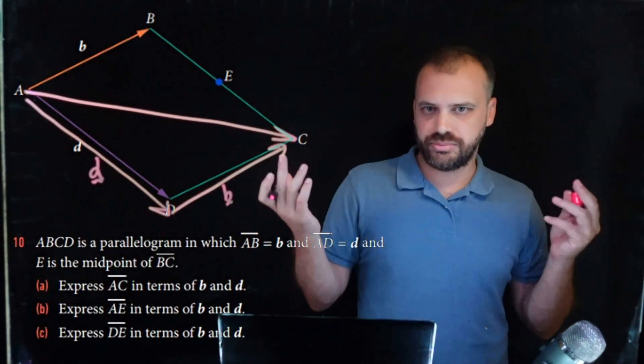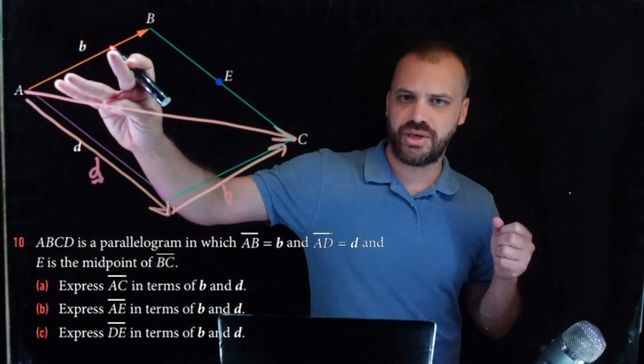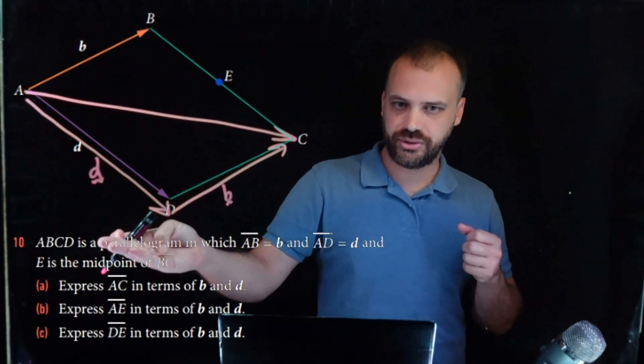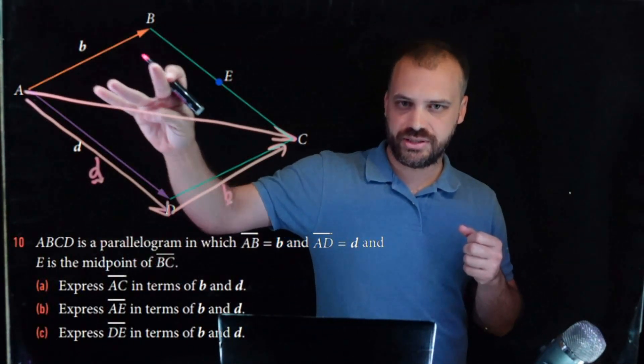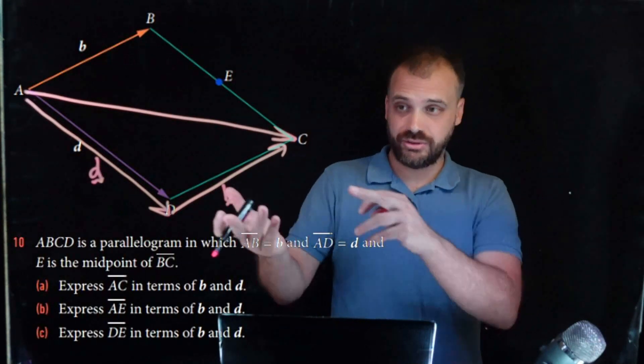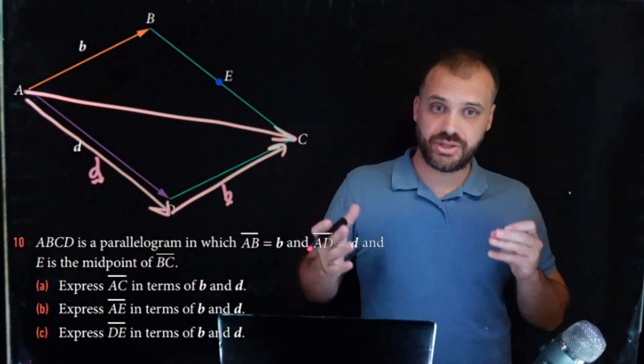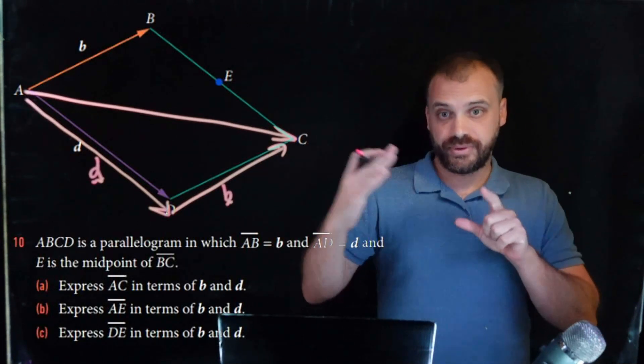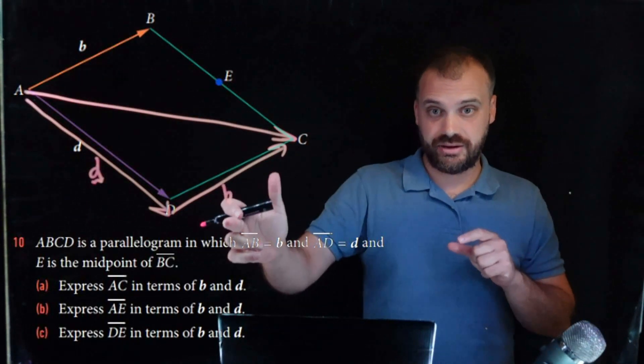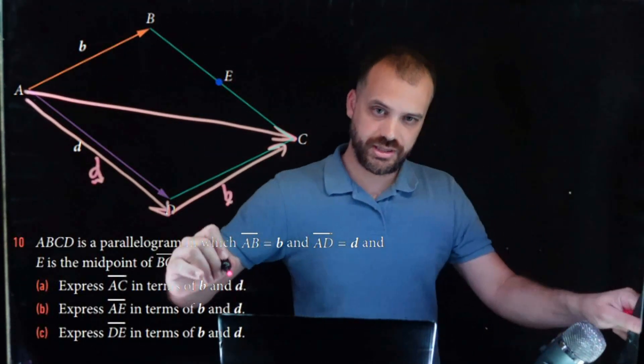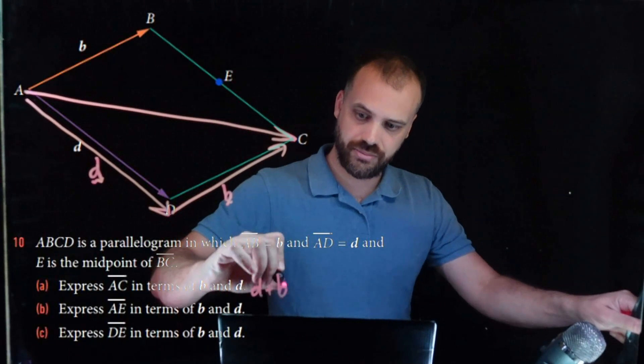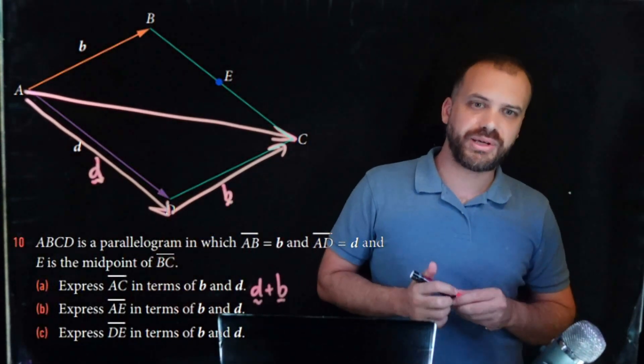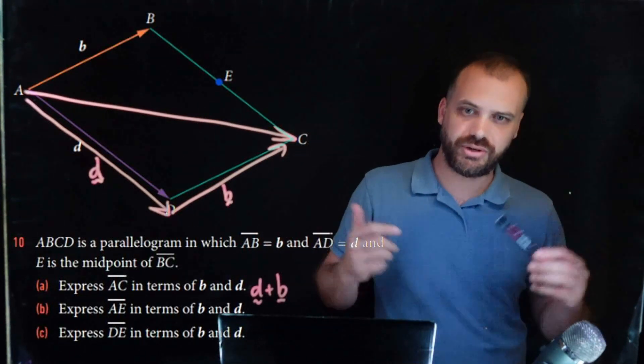Now, you might be thinking, wait a minute, B is up there. These vectors are parallel, we're told that in the question, it's a parallelogram. If these vectors are parallel and it's a parallelogram, they're the same length as well. So they're the same vector. Vectors only have magnitude and direction. The position of them doesn't matter. This vector is that vector. So first answer is D plus B. Some people think you've got to put that in alphabetical order. You don't. B plus D would also be a correct answer.